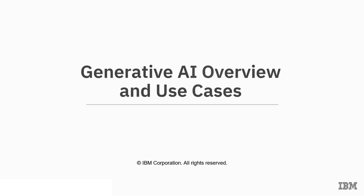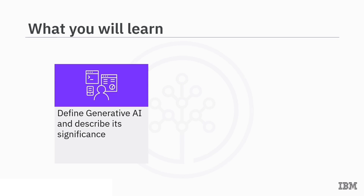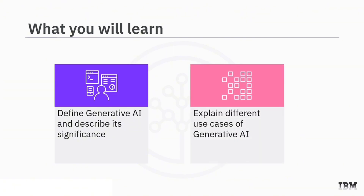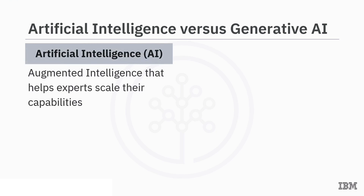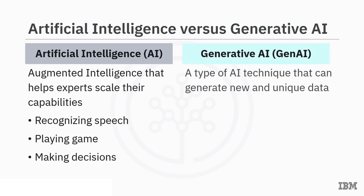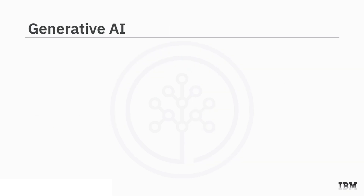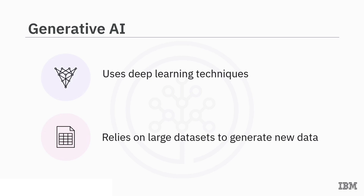Welcome to the Generative AI overview and use cases. After watching this video, you'll be able to define generative AI, describe its significance, and explain different use cases. AI is defined as augmented intelligence that enables experts to scale their capabilities while machines handle time-consuming tasks like recognizing speech, playing games, and making decisions. Generative AI, or Gen AI, is an AI technique capable of creating new and unique data ranging from images and music to text and entire virtual worlds, using deep learning on vast datasets.